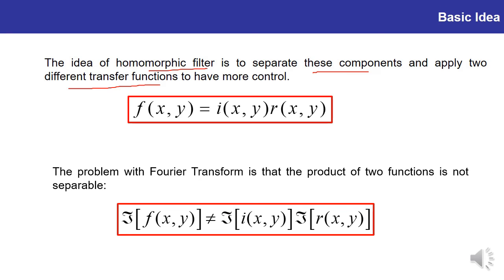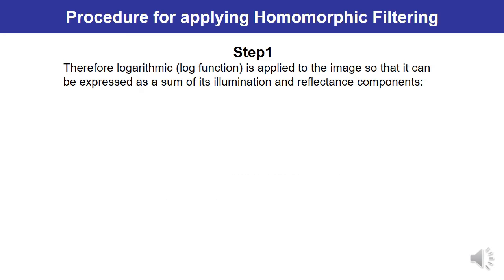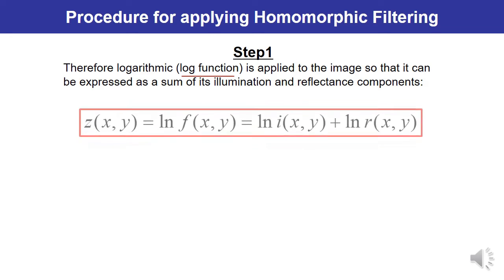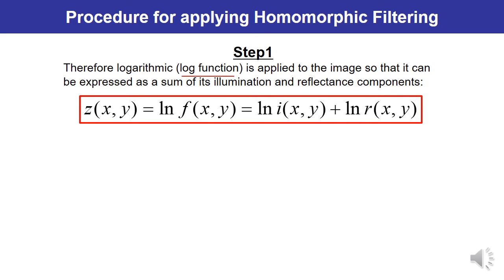Since Fourier transform cannot be applied directly, we need a different function. Step 1: Apply the logarithmic function to the image. When you apply the logarithm to the product of the illumination and reflectance terms, it converts the product into a sum of the individual terms. So ln[f(x,y)] = ln[I(x,y)] + ln[R(x,y)], meaning the logarithm of f(x,y) equals the log of the illumination component plus the log of the reflectance.